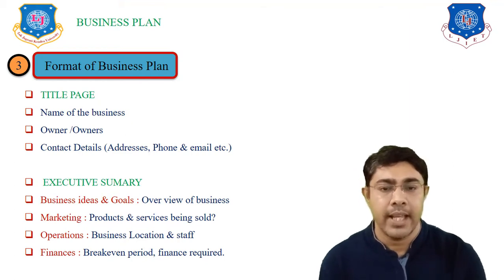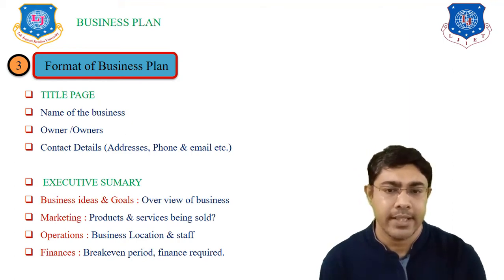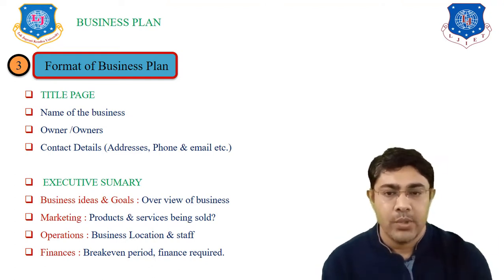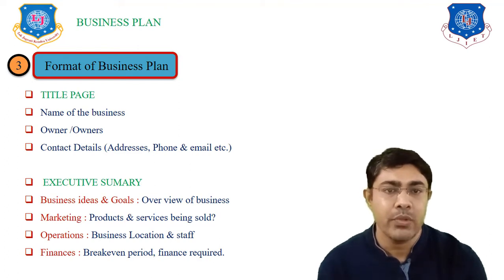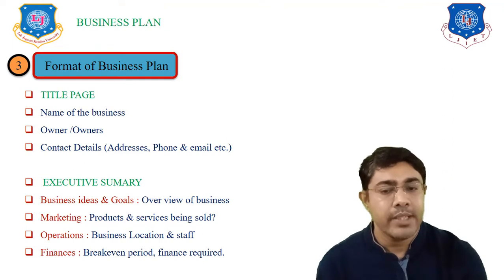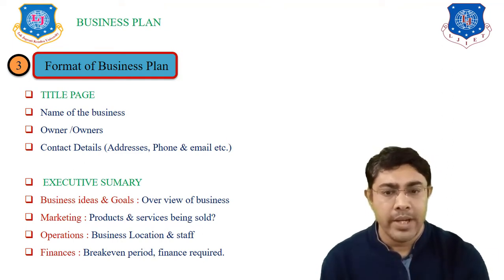contact details like address, phone, emails, etc. This must be considered in your title page. The next content of your business plan is the executive summary, which includes business ideas and goals, marketing, operations, and finances.